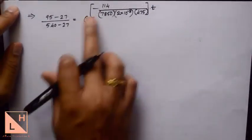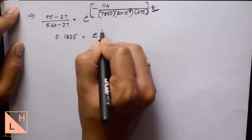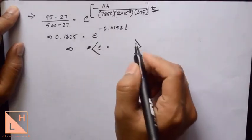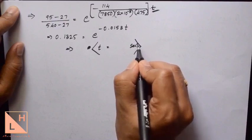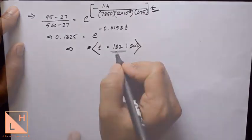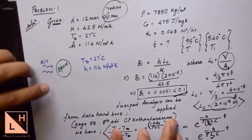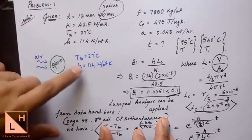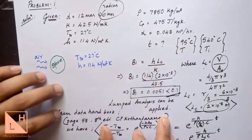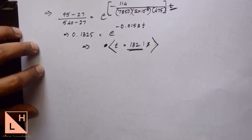After substitution the only unknown is small t. Using your calculator, find the value of t in seconds, and you will get 132.1 seconds. This means that for a steel sphere of 12mm diameter subjected to the given air stream conditions, the time to cool from 540 degrees Celsius to 95 degrees Celsius is 132.1 seconds.